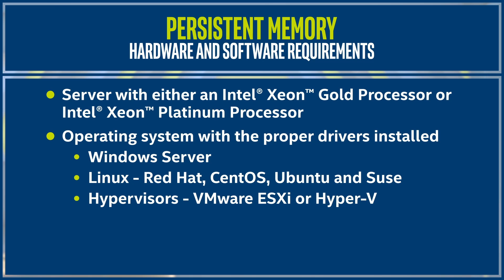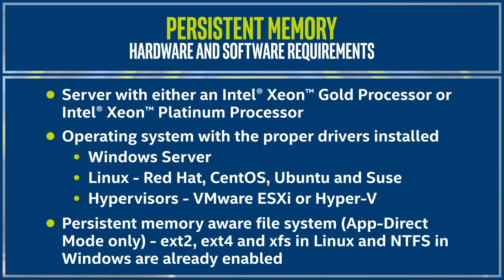Finally, and only if you plan to use AppDirect, you will need a persistent memory-aware file system. The most common file systems — such as EXT2, EXT4, and XFS in Linux, and NTFS in Windows — are already enabled for persistent memory. You might be wondering: why do we need a file system? After all, the whole point of putting persistent memory on the memory bus was to get rid of the software stack, which includes the file system. The reason is tightly coupled with the programming model used for persistent memory.